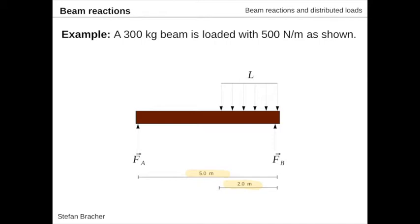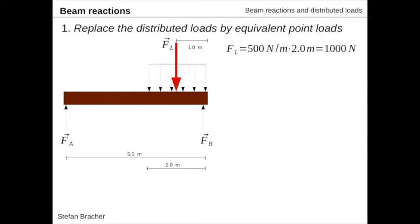Now what was the first step exactly? The first step is calculating the distributed loads or finding their equivalent point load. In this case, this is fairly simple. We had 500 newtons per meter over a length of two meters, so we get a total of 1000 newtons. Also, the load is acting in the middle of the distributed area, so exactly one meter from the right end.